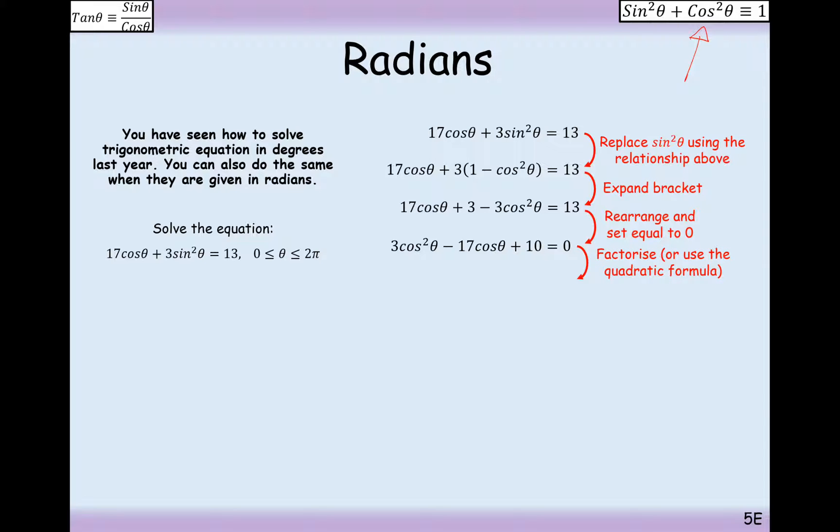and I get a final equation here of 3cos²(θ) - 17cos(θ) + 10 = 0. Now, we can try and factorize here, and in this case, we're going to get cos(θ) = 2/3 and cos(θ) = 5. Now, hopefully,